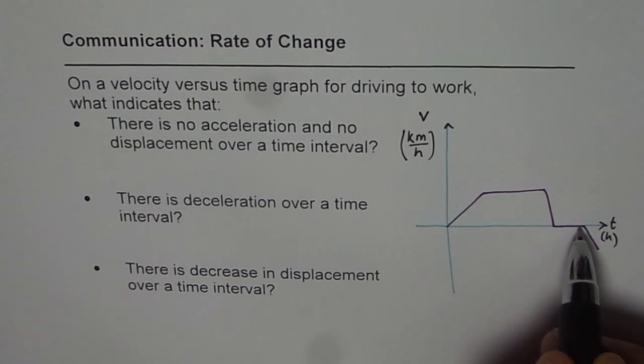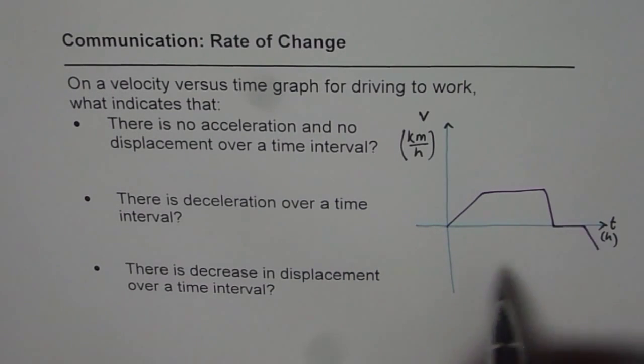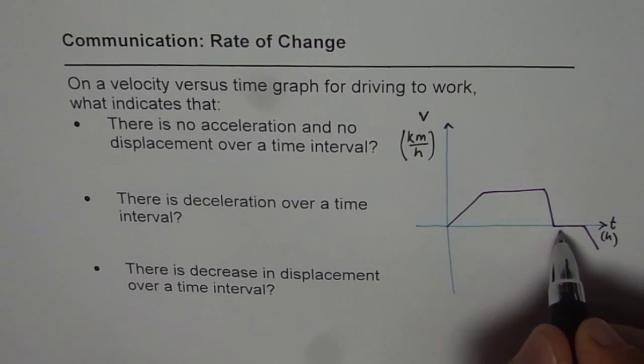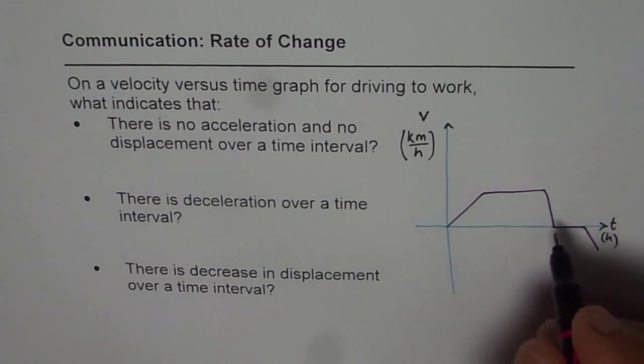Now let's look into this part. Velocity is zero, so that means it is not changing also, zero from here to there. No change in velocity means no acceleration. Now since there is no velocity, zero means standstill, that means no displacement also. So this part indicates that there is no acceleration and no displacement.